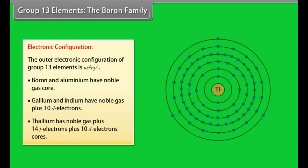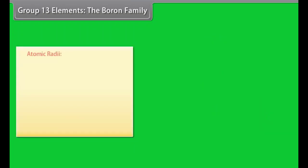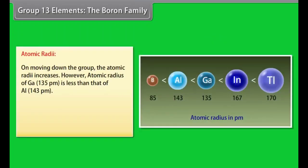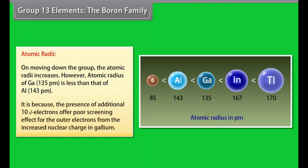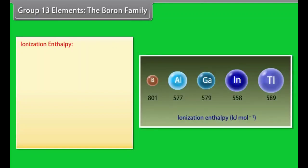Atomic radii. On moving down the group, the atomic radii increases. However, atomic radius of gallium, 135 picometer, is less than that of aluminium, 143 picometer. It is because the presence of additional 10d electrons offer poor screening effect for the outer electrons from the increased nuclear charge in gallium.